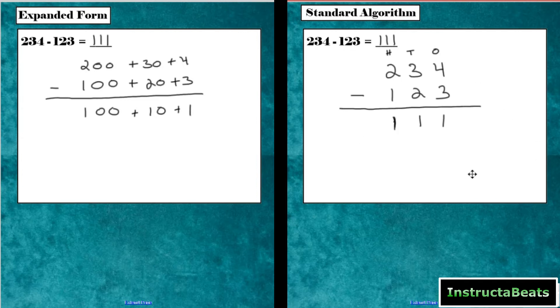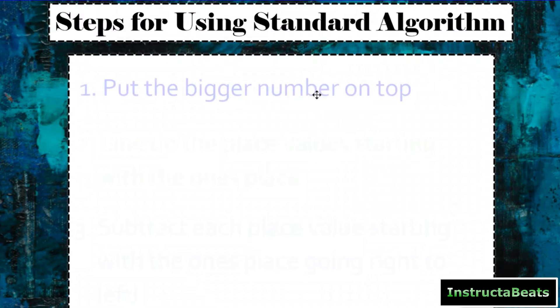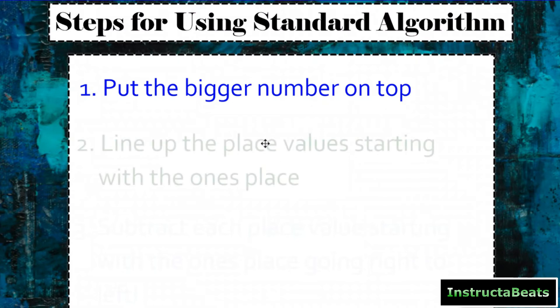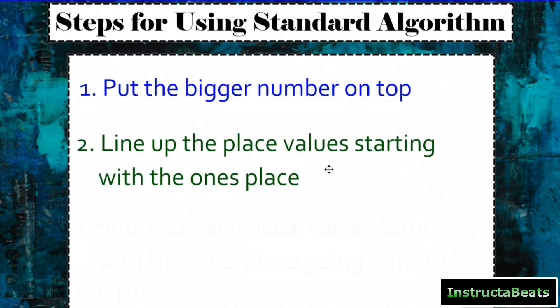Let's name the steps that I just did using my standard algorithm. Our steps for using the standard algorithm: step number one, we want to put the bigger number on top. Step number two, we want to line up the place values starting with the ones place. So just like we do with the expanded form, we're going to line up our ones, our tens, and our hundreds. Now, it's a little bit more difficult to make sure we're being neat using the standard algorithm because we don't have those plus signs on either side of the digits to help us line up our place value.